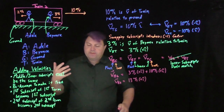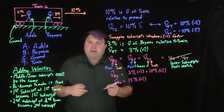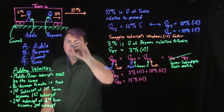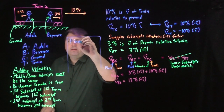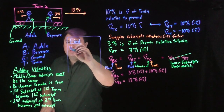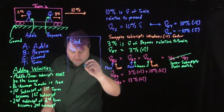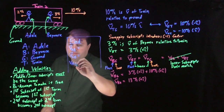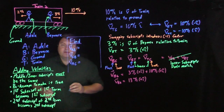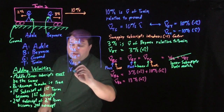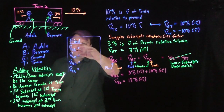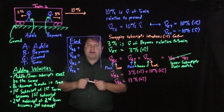Now we have a little playground to work with. Find: the velocity of Adele relative to Beyonce, the velocity of the ground relative to Beyonce, the velocity of Adele relative to the ground, and the velocity of the train relative to Adele. Pause here and try to find these four, and then we'll come back and work through them.